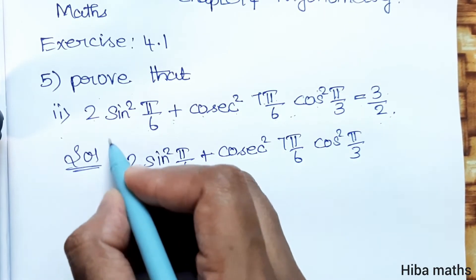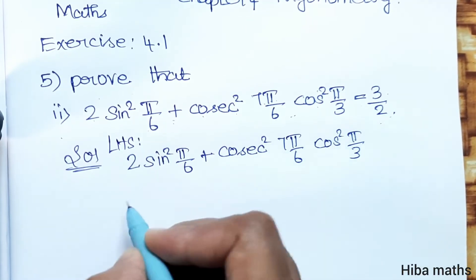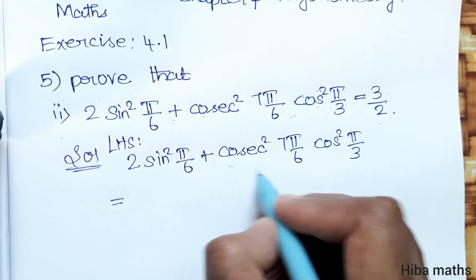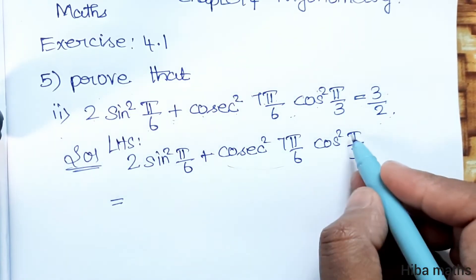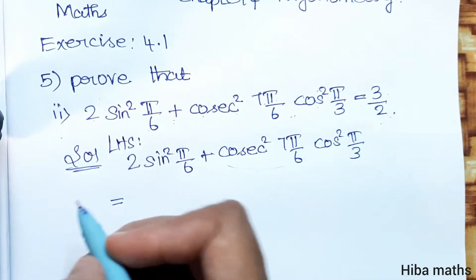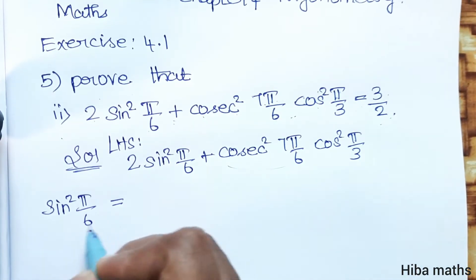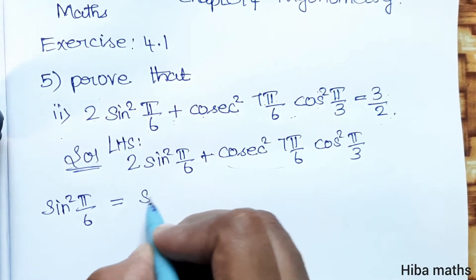In LHS, in the next line we'll take each term separately - first term, then second term, then third term separately, and then we'll join them together. First let's take sin²(π/6).